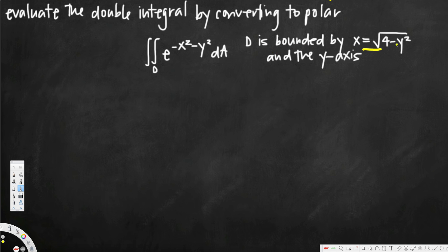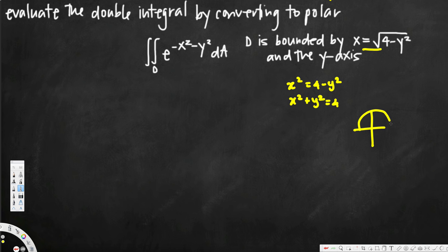x is equal to the square root of 4 minus y squared. Now to better see this region, we can square both sides. That's going to give us x squared is equal to 4 minus y squared, and if you rearrange this, that's going to give you x squared plus y squared is equal to 4. From this you can see this is a circle.